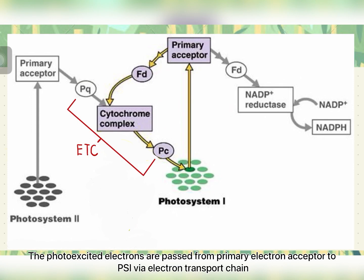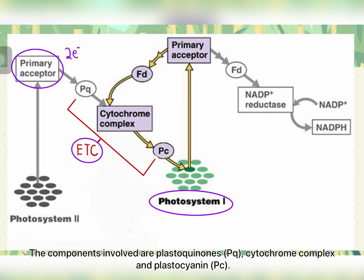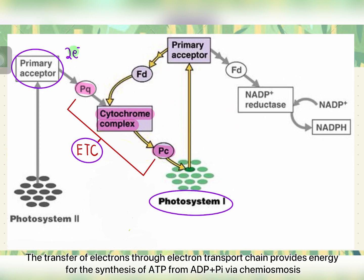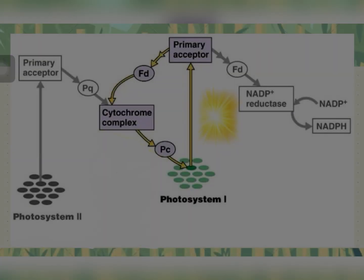The photo-excited electrons are passed from the primary electron acceptor to PS1 via the electron transport chain. The chain involves plastoquinone (PQ), a cytochrome complex, and plastocyanin (PC). The transfer of electrons through the electron transport chain provides energy for the synthesis of ATP from ADP plus phosphate via chemiosmosis.